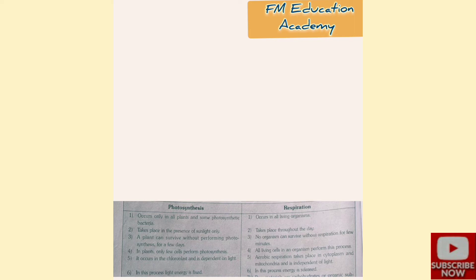Photosynthesis occurs in the chloroplast and is dependent on light; respiration occurs in the cytoplasm and mitochondria and is independent of light. In photosynthesis, light energy is fixed; in respiration, energy is released. Raw materials for photosynthesis are carbon dioxide and water; for respiration they are carbohydrates and oxygen. In photosynthesis, oxygen is liberated; in respiration, oxygen is utilized and carbon dioxide is released.